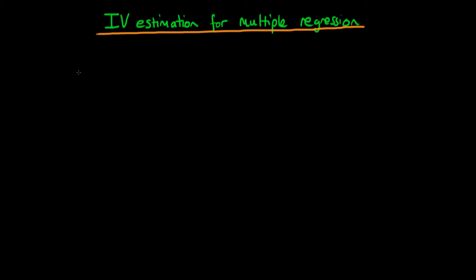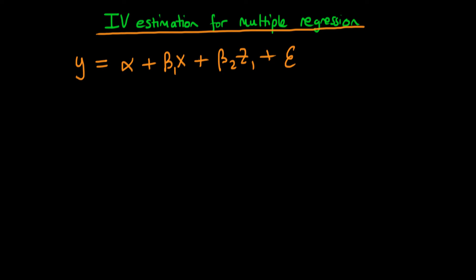In this video, I want to talk about how we go about doing IV estimation for the case where we have multiple regressors. The relationship of interest might be something like y equals alpha plus beta 1 times x plus beta 2 times z1 plus epsilon. I've denoted this second regressor as z1 because I'm assuming that there is no covariance between z1 and epsilon.